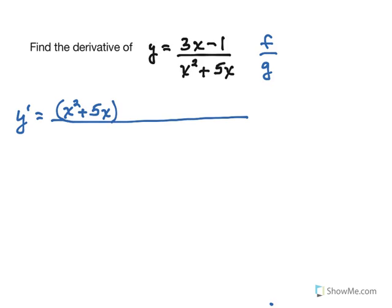So there's your denominator, now we multiply by the derivative of the numerator, which is 3. Again, it's always minus. Then keep the numerator, and multiply by the derivative of the denominator.